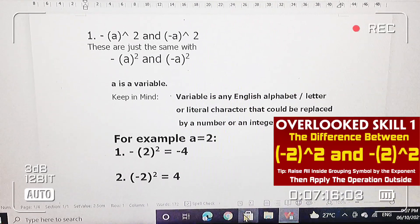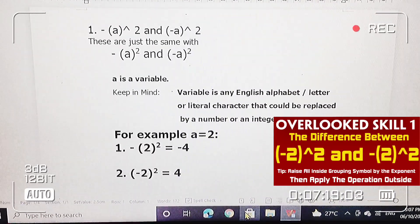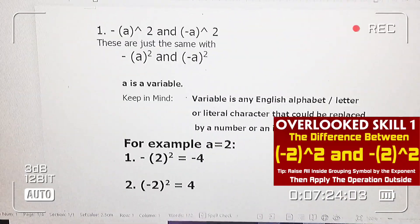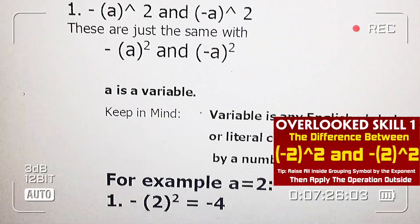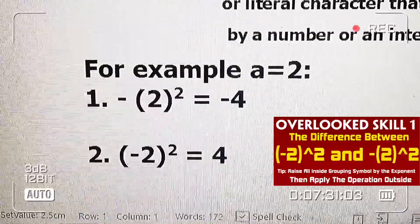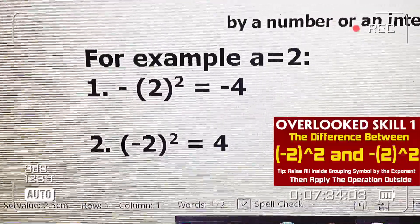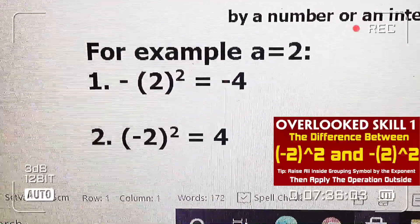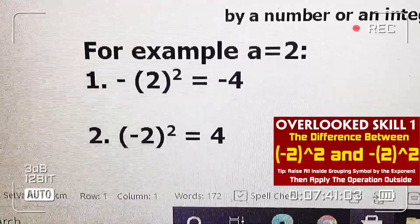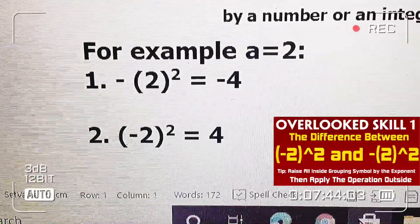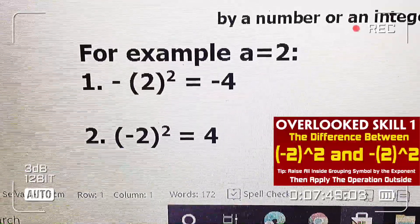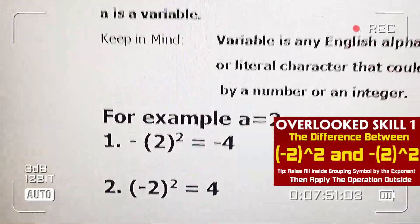Hi, welcome back to SoTrue_PH. Allow me to illustrate the 5 overlook math skills. So please keep in mind this illustration. Kaya sila magkakaiba kasi ito yung dalawa sa number 1: yung 2 dyan, multiplied by itself twice, pagkatapos we multiply by negative kasi nasa labas ang negative. Yung number 2 naman, ang buong negative 2 multiplied by itself twice. So we have negative 2 times negative 2 equals 4 — kaya sila magkakaiba.